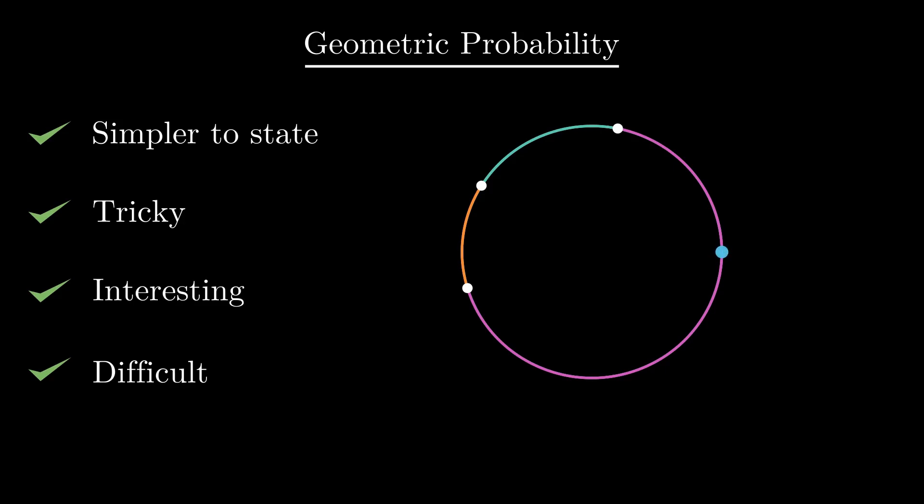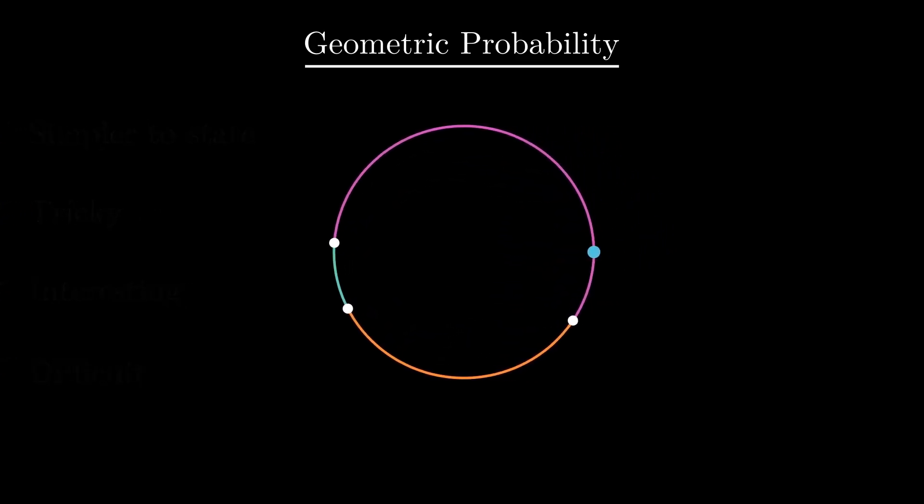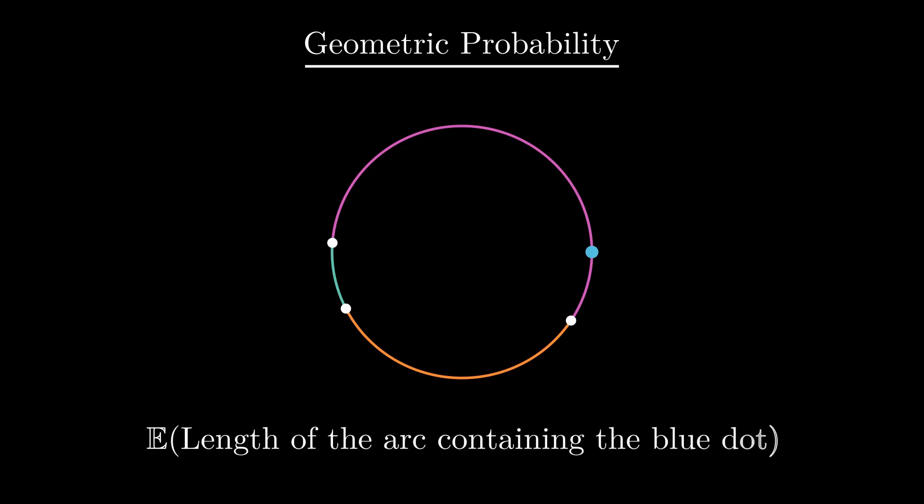Here is a tricky one. Consider three points chosen uniformly on the circumference of a unit circle, centered at the origin. The circle would now be divided into three arcs. What is the expected length of the arc that contains the point (1,0)? If you think all three arcs are equal on average and hence each arc should be of length 2π by 3, because each of them is equally likely to contain the blue point, the required expected length must be 2π by 3.